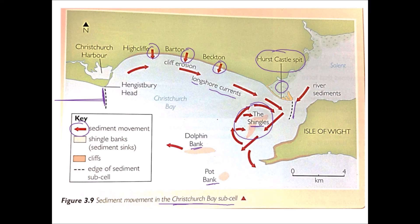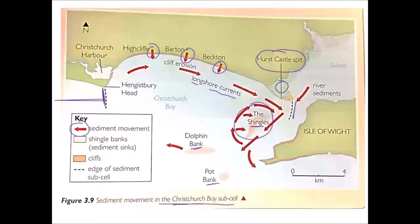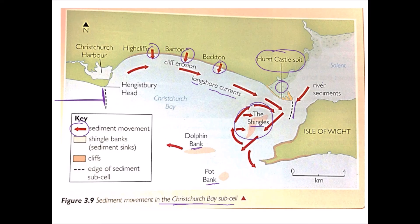We can see how the movement of material is pretty much self-contained — inputs from cliff erosion and river sediment brought down from the River Solent, movement of material around the cell, and stores of material in the beaches, the spit and the sandbanks.